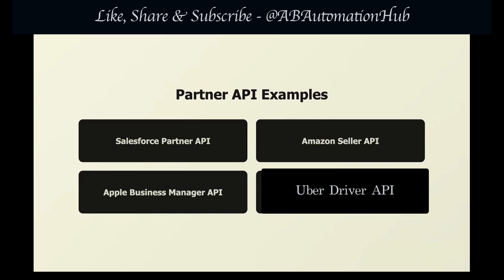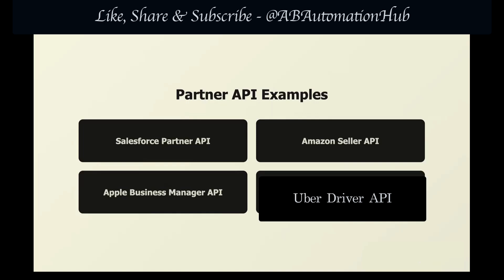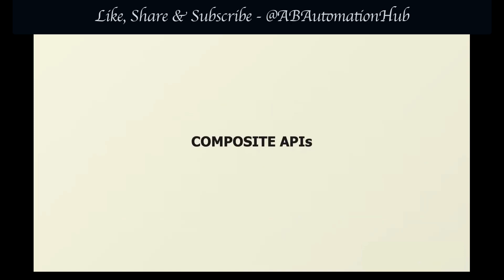Now there's one more type that is a bit different — composite API. It's not just about who can access it, but about combining multiple APIs into one. Composite APIs can make requests to different endpoints in a single call. The approach is meant to boost performance and speed up execution. Every API call involves network latency and processing time, so if you need to call five APIs, that's five round trips. With composite API, you make one call and get everything back at once. They are built on top of other APIs, like a wrapper that bundles multiple operations together.